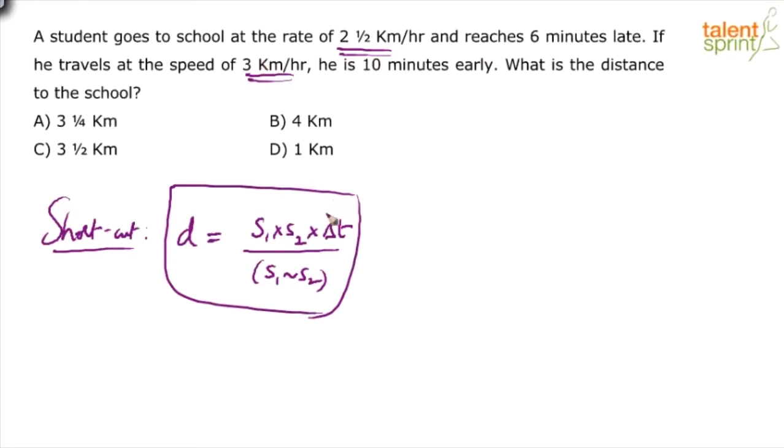What is this Δt? Δt is the difference of time - the time when he reached late plus the time when he reached early. You might be wondering, when it's Δt which is supposed to be the difference, why are we adding? We're adding because in one case he is late, in the other case he is early.